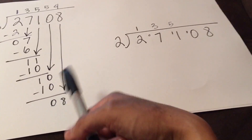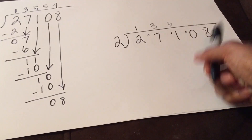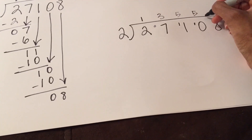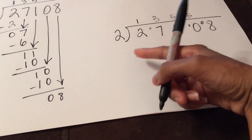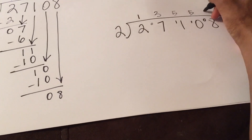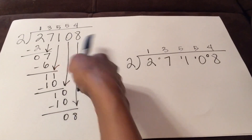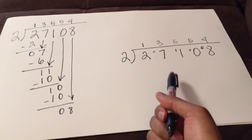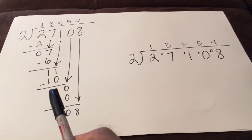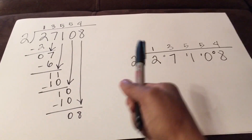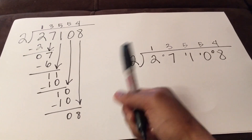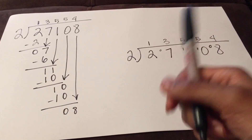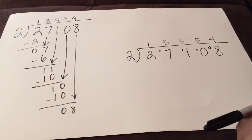Two goes into eleven five times, which is ten. Ten minus eleven — the difference is one, so I carry the one, just like we did over there but with a lot less writing. Now two goes into ten five times — it goes in evenly, so the remainder is zero. Then two goes into eight four times. You get the same answer, but way less writing. I just keep the quotient digit in my head, subtract in my head, and put the remainder down in front of the next digit.